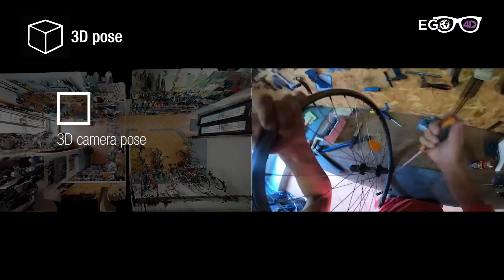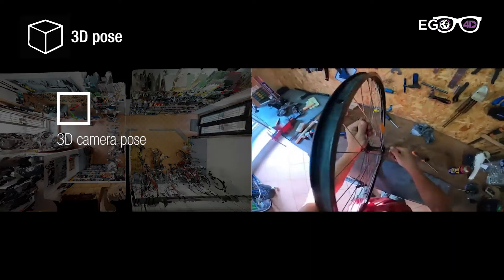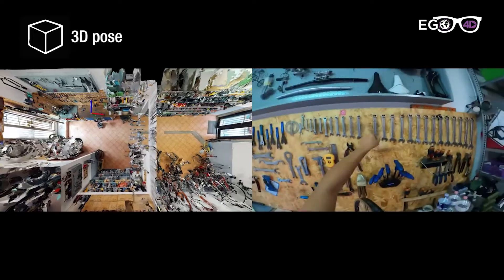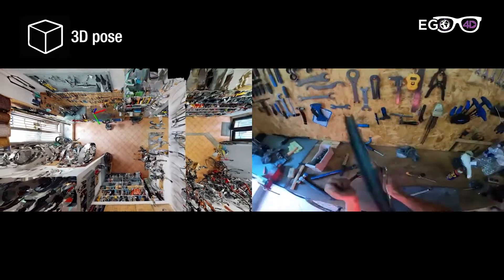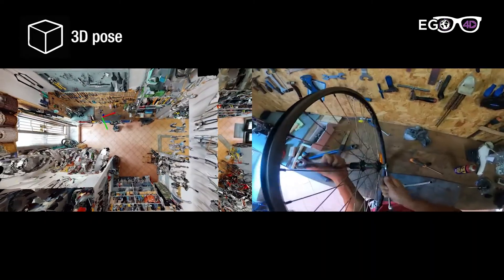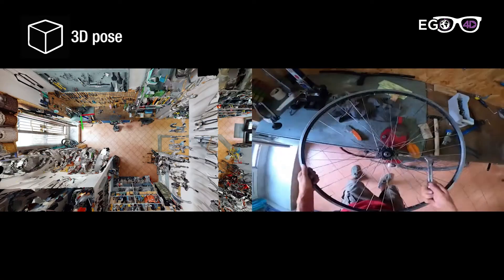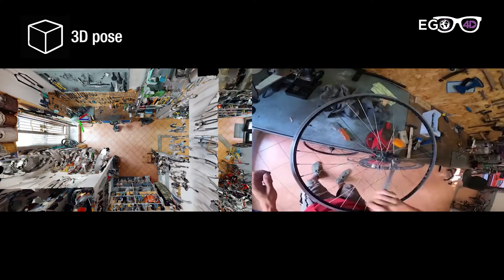Ego4D data includes 3D geometry. An egocentric image on the right is localized in the 3D reconstructed space on the left. This will allow understanding egocentric activity in a larger context of scenes.